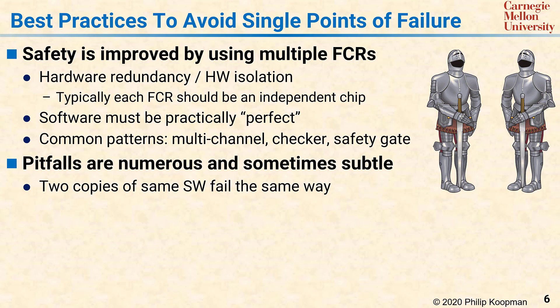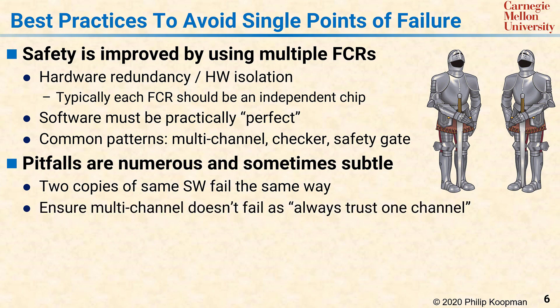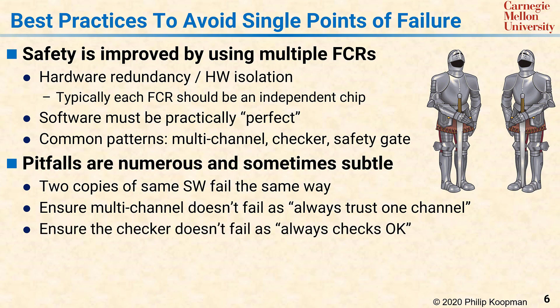It is important in a multi-channel architecture to make sure the system does not fail by always trusting one channel, even if that's the faulty channel. The safety gate architecture can have the same problem in that the gate can decide that it's always going to let the outputs through, even if the checker tells it to shut down. In a doer-checker architecture, it is important to ensure the checker is actually working and has not failed in a way that just permits all outputs to go out, whether safe or not.